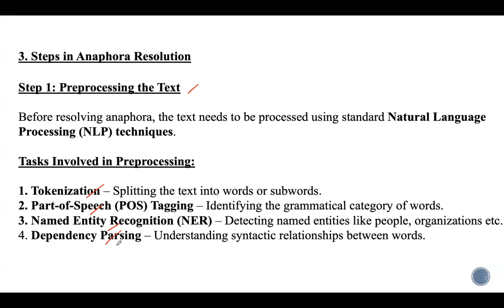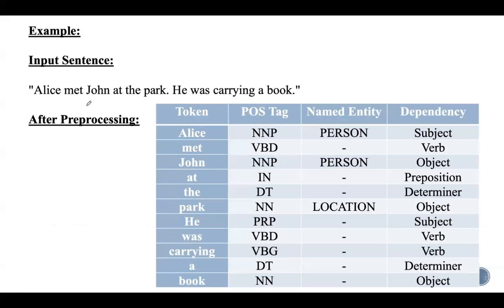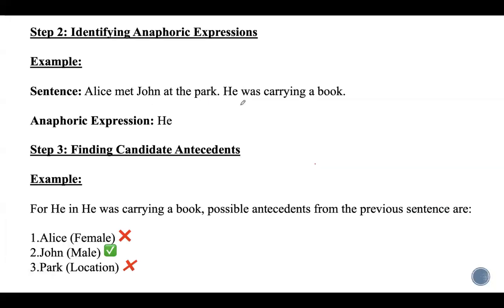In the dependency tree, nodes represent words and edges represent syntactic dependencies such as subject-verb and object-verb relationships. Consider the input sentence 'Alice met John at the park; he was carrying a book.' After preprocessing, we get individual tokens, their respective POS tags, named entities, and dependency structure. The second step is to identify anaphoric expressions — the system detects pronouns, definite noun phrases, and demonstrative expressions that could refer to earlier words. In this sentence, the anaphoric expression is 'he.'